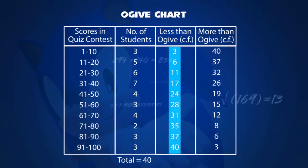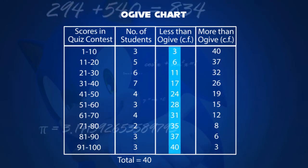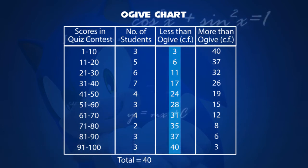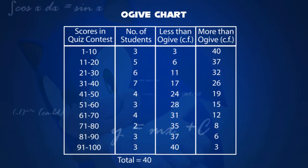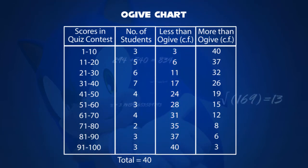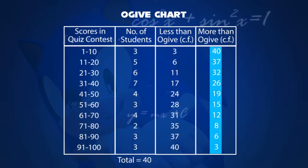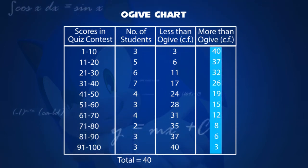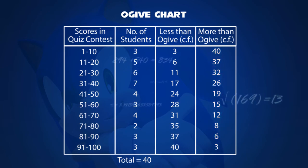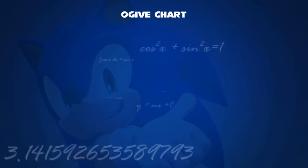If you're using less than ogive curves in the third column, you'll start with a minimum frequency and add all the way to 40 in a cumulative distribution. Similarly, if you're using more than ogive curves in the fourth column, you'll start with a maximum of 40 and subtract all the way to the minimum frequency.